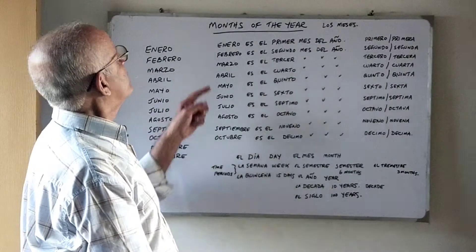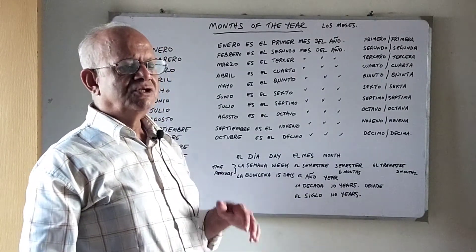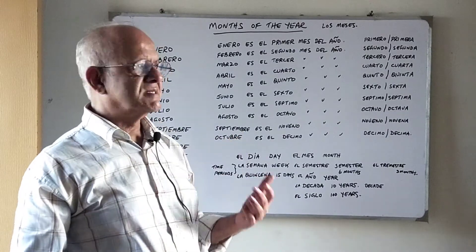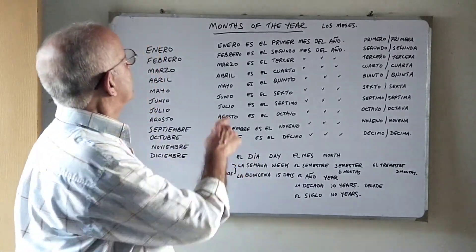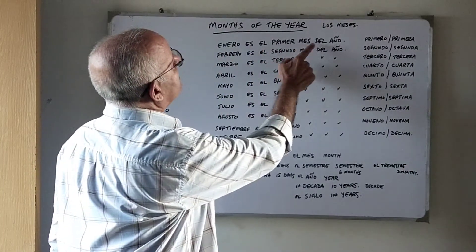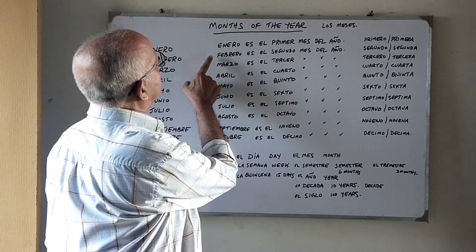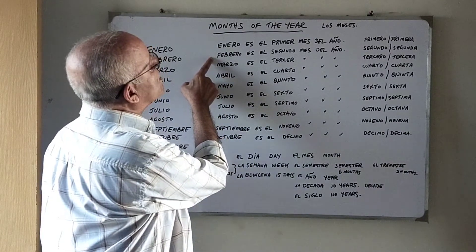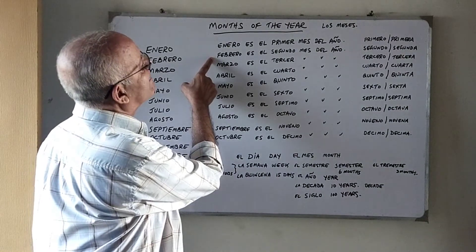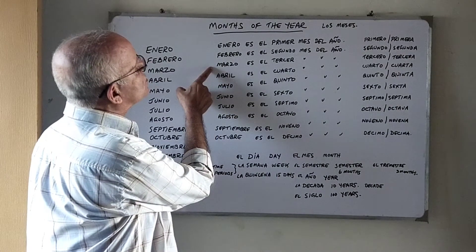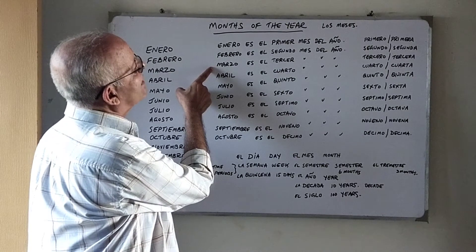Now a simple sentence with each month of the year saying January is the first month, etc. Enero es el primer mes del año — January is the first month of the year. Febrero es el segundo mes del año — February is the second month of the year. Marzo es el tercer mes del año — March is the third month of the year.